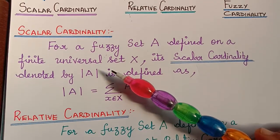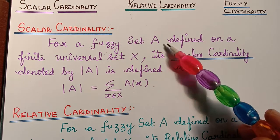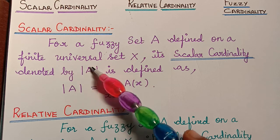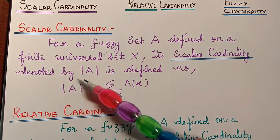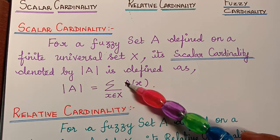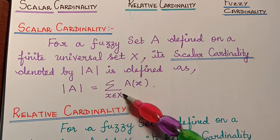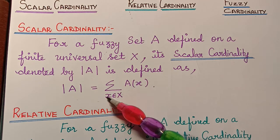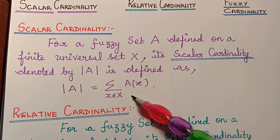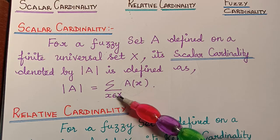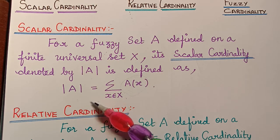First we shall learn about scalar cardinality. For a fuzzy set A defined on a finite universal set X, its scalar cardinality, denoted by modulus of A, is defined as modulus of A equal to the summation of A(x) for all x element of capital X. So when we sum up all the membership values of a fuzzy set, we obtain the cardinality of the fuzzy set.